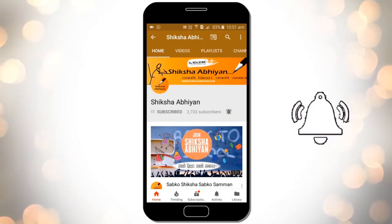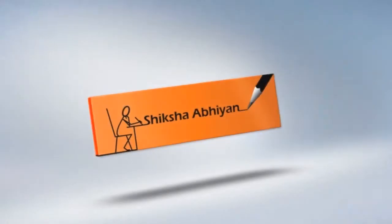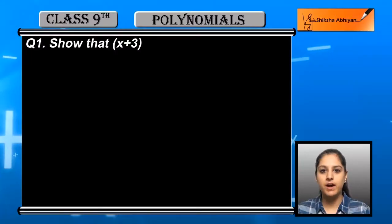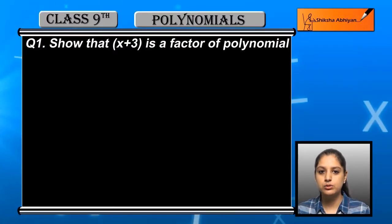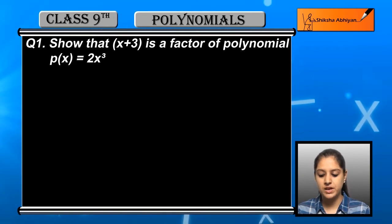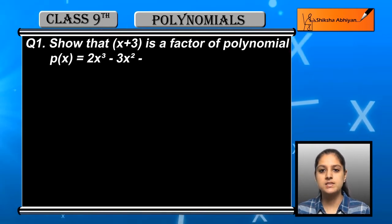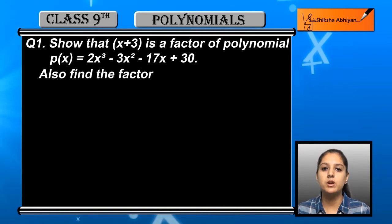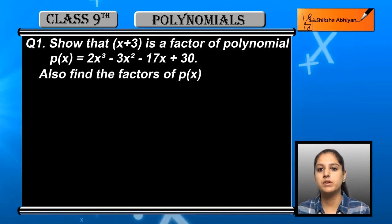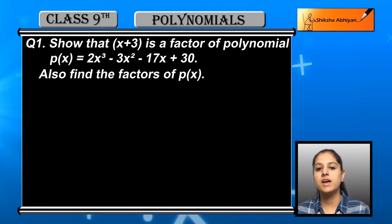Chapter number two: Polynomials. Let us have a look at some important questions of this chapter. Question number one: Show that x plus 3 is a factor of polynomial p(x) = 2x³ minus 3x² minus 17x plus 30. हमें ये show करना है कि px polynomial जो हमें given है, x plus 3 उसका एक factor है।